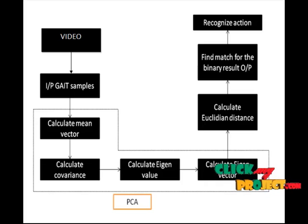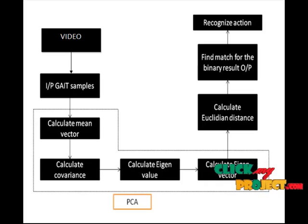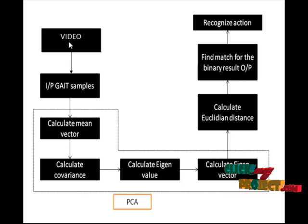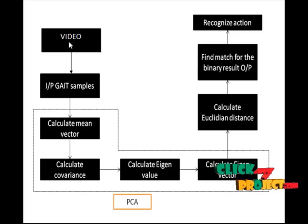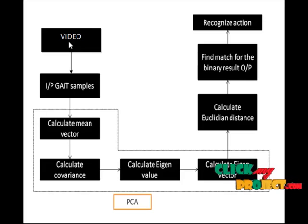Action recognition aims to recognize the action and goals of one or more agents from a series of observations on the agents' actions under environmental conditions. Many different applications have been studied by researchers in activity recognition, with examples including assisting the sick and disabled.